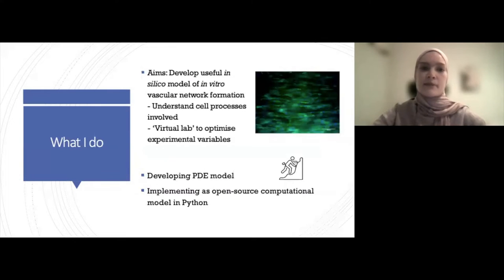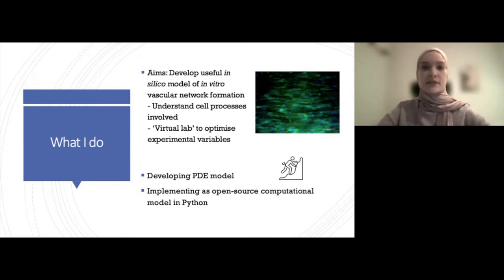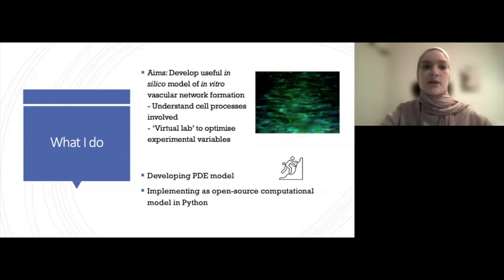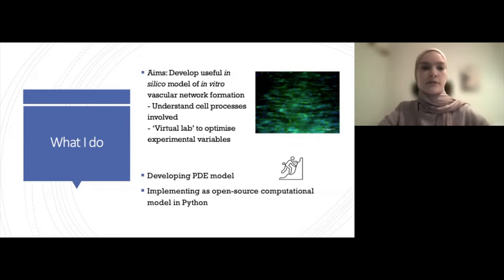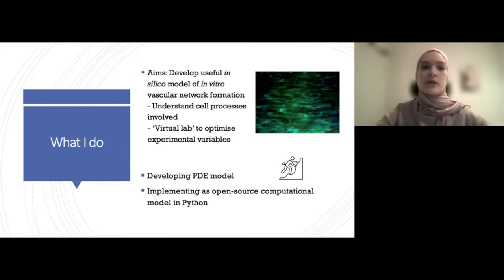The main aim of my PhD project is to develop a useful in silico model of in vitro vascular network formation — essentially taking what happens with cells in a dish and modelling this in silico. The two main aims are to understand the cell processes involved and then to use the in silico model with experimental data to parameterise the model as a virtual lab and optimise experimental variables.